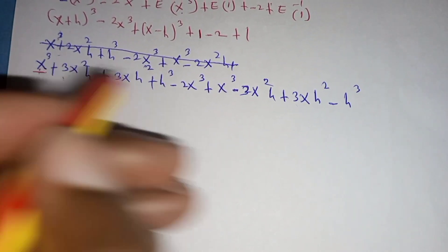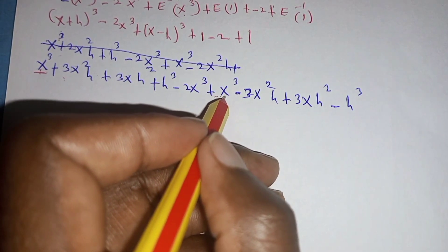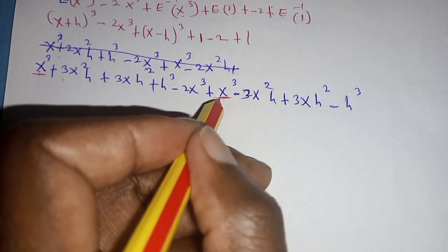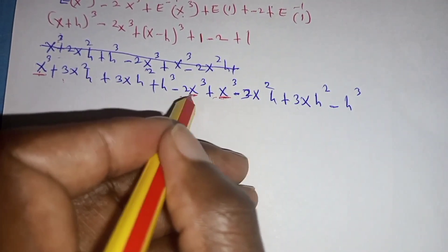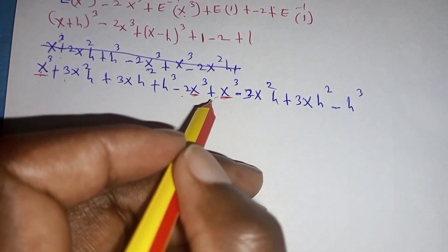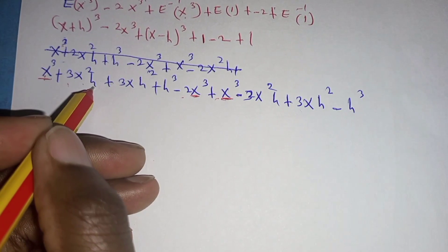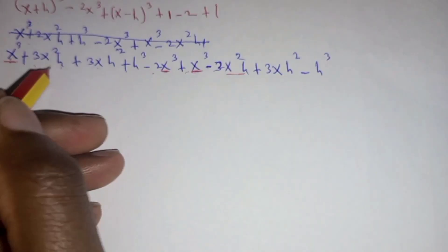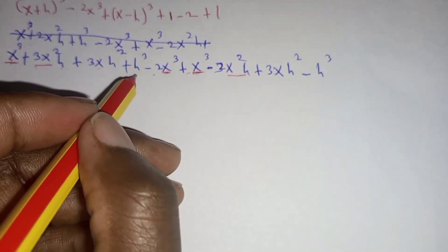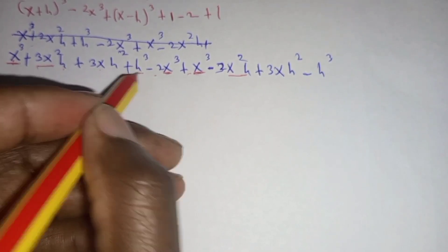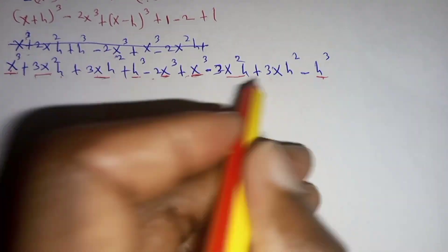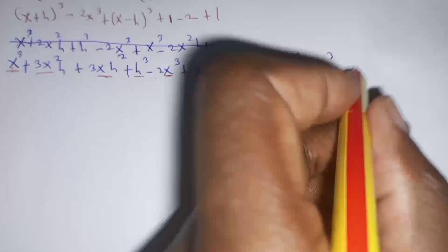So this x cubic and x cubic will be 2x cubic minus 2x cubic, those will cancel out. Then we are left with this part, so this part and this other part will cancel out. Also we are left with 3x h squared and 3x h squared and 3x h squared.